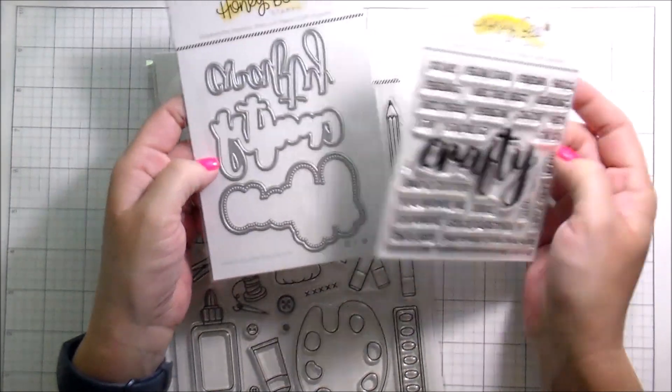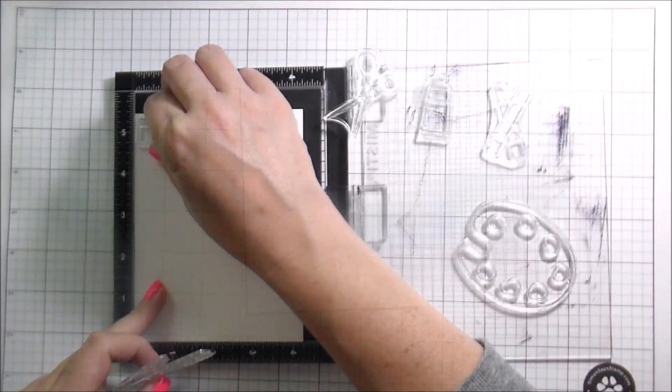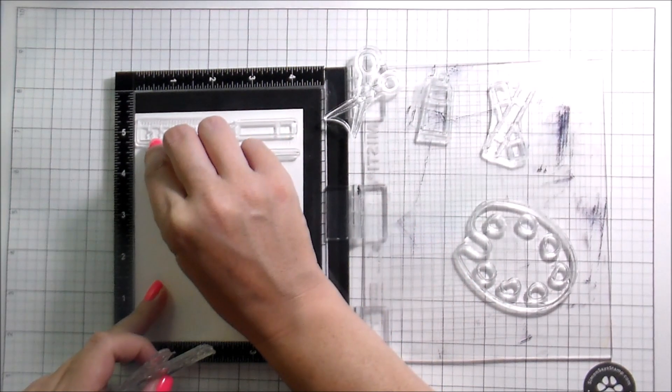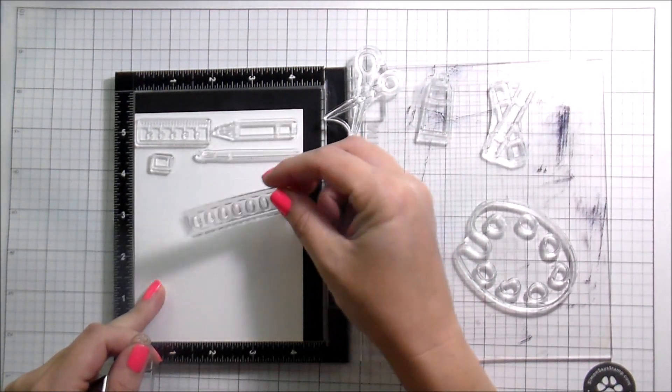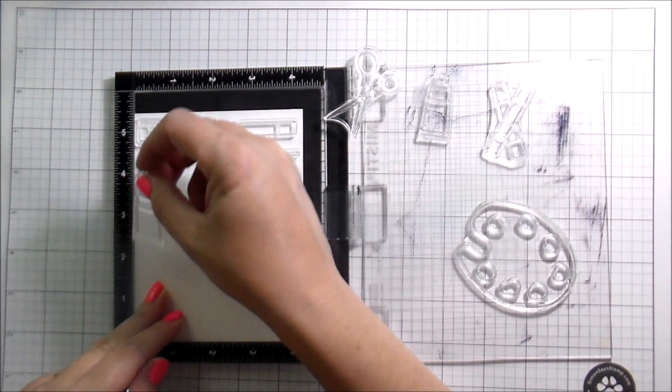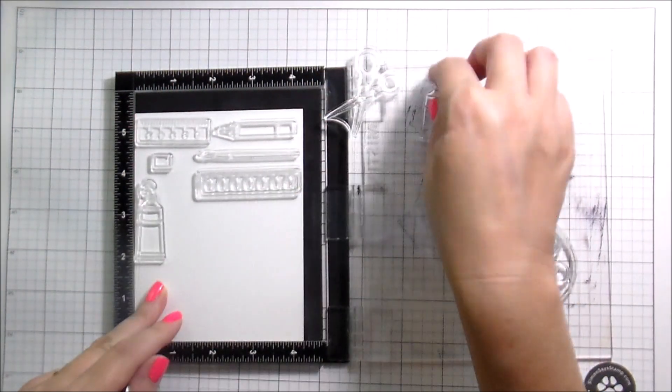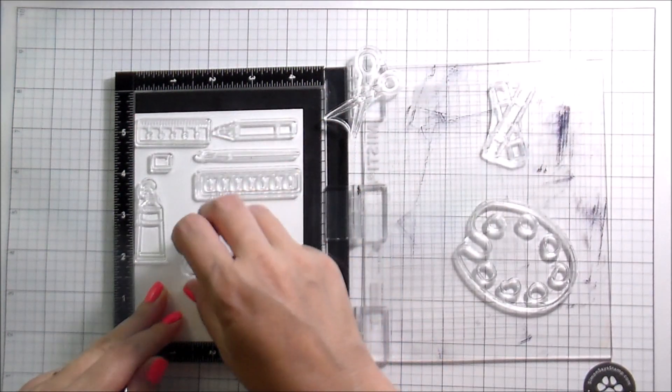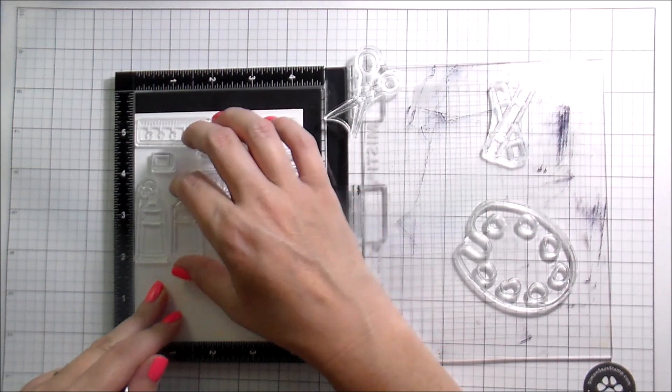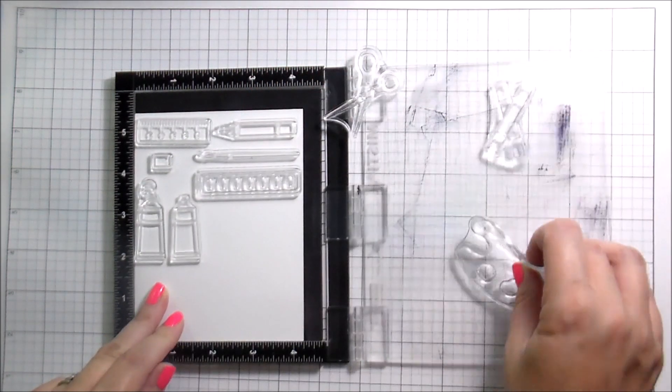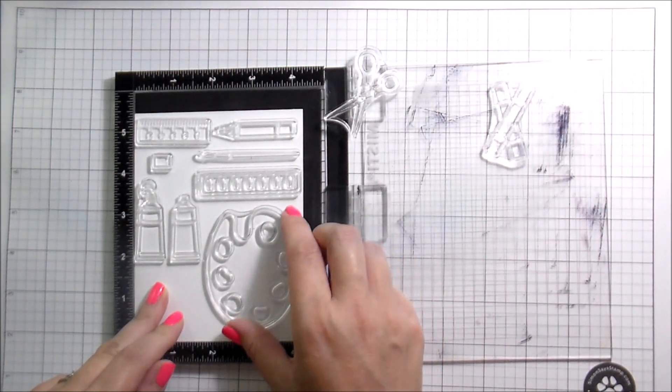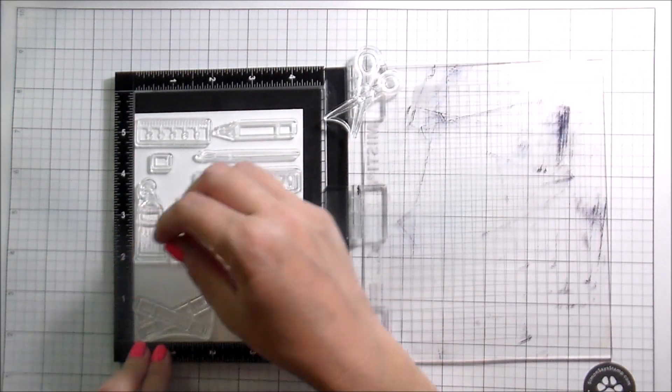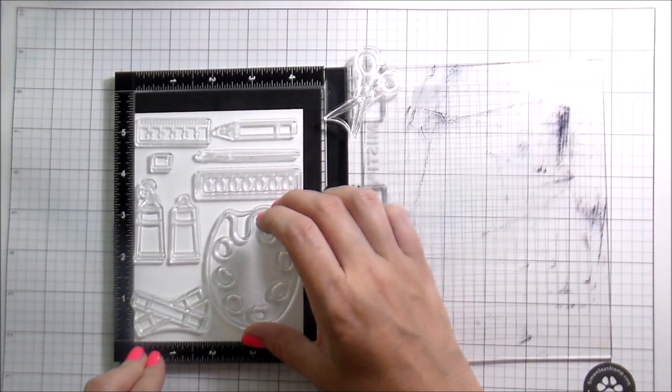Before we get too far into this, I just wanted to let you know there is a summer savings sale going on over at Honey Bee through August 8th at 11:59 PM, and it gives you 15% off site-wide. If you love these stamps or you have some other things on your Honey Bee list, it's a good time to go pick them up because you get 15% off your entire order, which is pretty amazing.